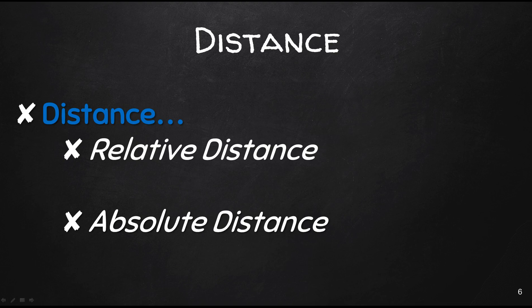So another important component of spatial thinking is distance. So in general, there are two ways in which we describe distance, relative and absolute. Relative distance is the way in which most of us discuss distance in our daily lives. We use terms such as close to, near, far, short, and long to describe the proximity of two locations from one another.